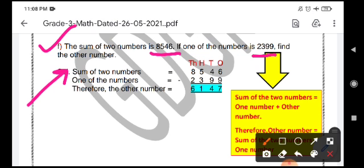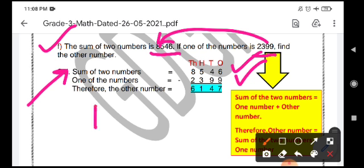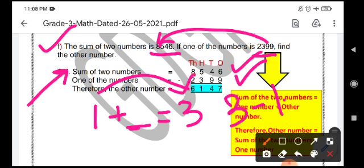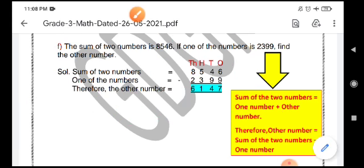First, you are going to write the sum of two numbers. Then, you are going to write the first number. When you will subtract this number from the larger number, you will get the second number automatically. For example, we are given with the sum of two numbers is 3. One number is 1. Second number, we don't know. So, what we will do? We will subtract 1 from 3. 3 minus 1 is 2. So, the second number is 2. Is it so? Yes. We are going to do this question like that.